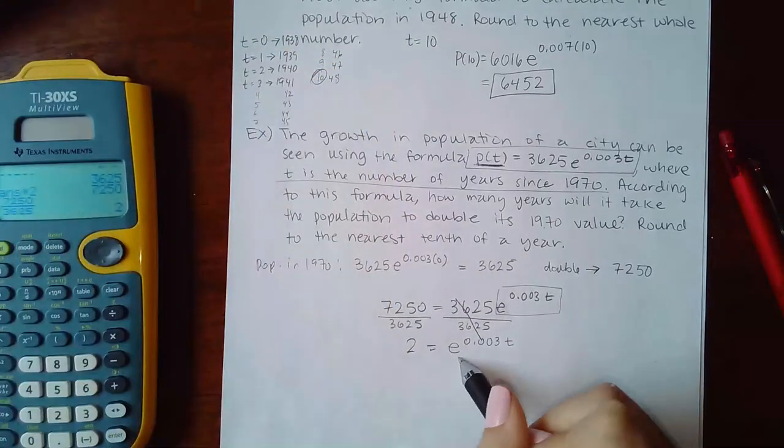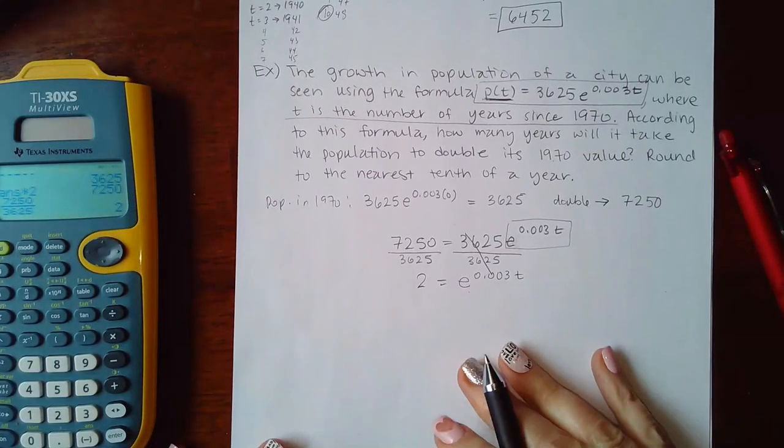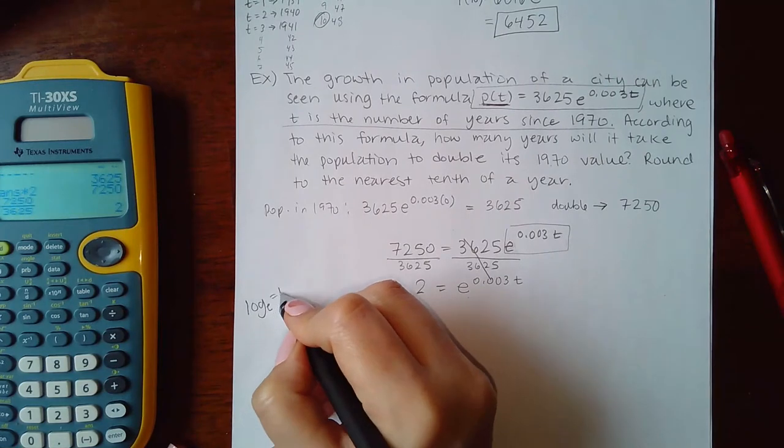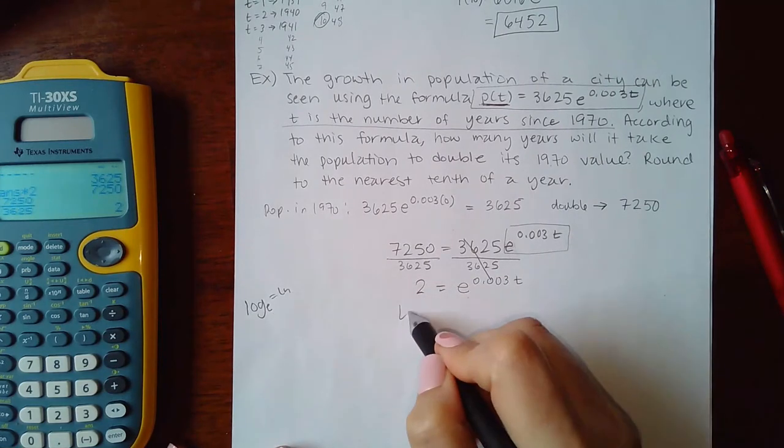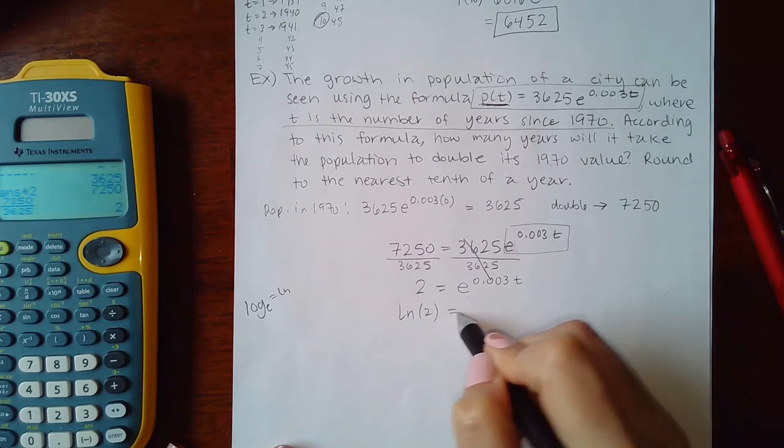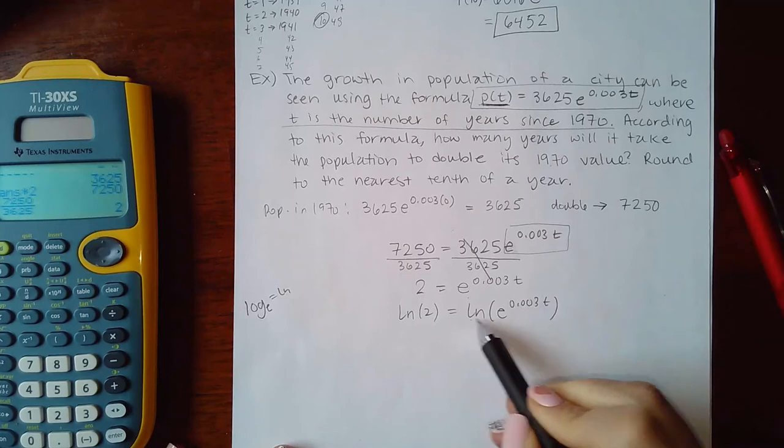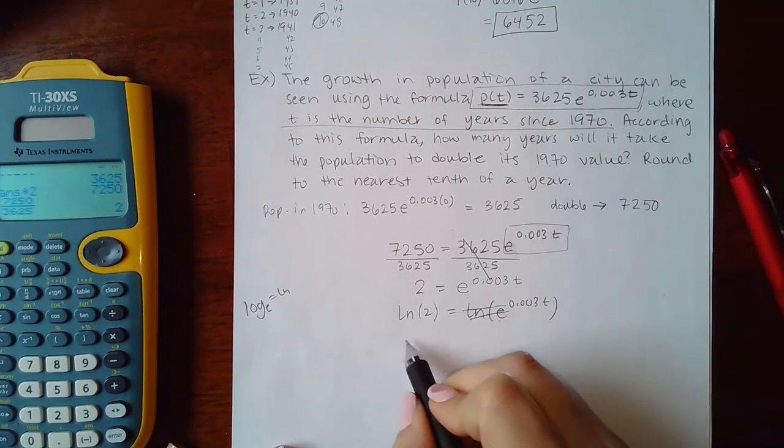Then now this is base e, so I'm going to have to do log base e, but remember log base e is the same as ln. So I'm actually going to do the ln of this side and I'm going to do the ln of this side. Then the ln, which is log base e, and base e are going to undo each other, so I just have 0.003t.